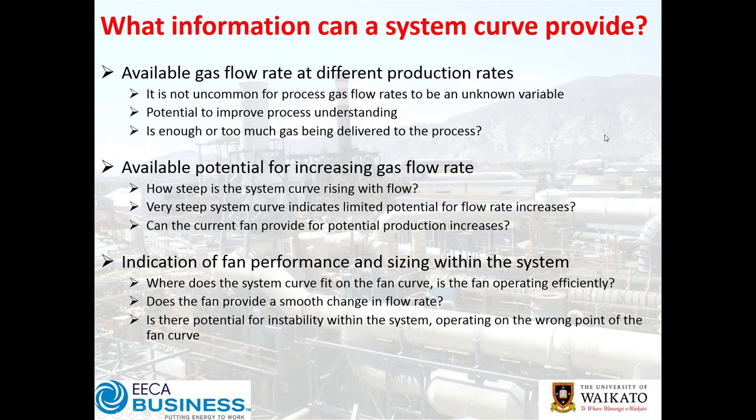With those cautions aside, what does the system curve actually provide us? The key thing is it gives us an indication of the available gas flow rate at different production rates. It's not uncommon for gas flow rate to be the unknown variable — often not measured, or if measured, the flow meter is reading incorrectly because it hasn't been set up right.